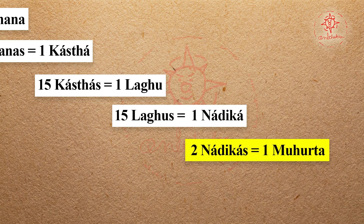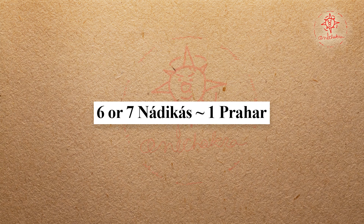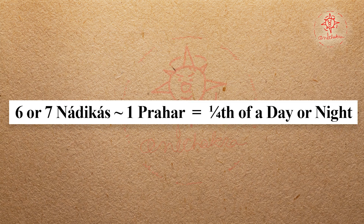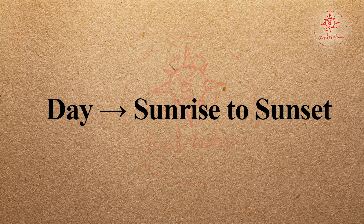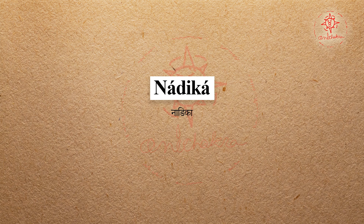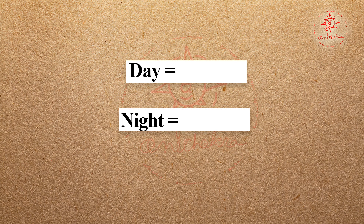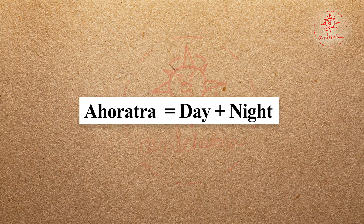Fifteen Laghus taken together are called a Nadika. A couple of Nadikas constitute one Muhurta, while six or seven Nadikas — as per whether the day or night is short or long — make one Prahar, which forms one quarter of a day or night of human beings. In the ancient Indian concept, a day means sunrise to sunset, and day and night together are called Ahoratra. Nadika is also known as Yama.